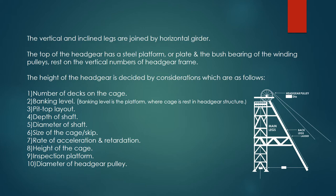The height of the headgear is decided by the following considerations: number of decks on the cage, banking level (the platform where cages rest in the headgear structure), head top layout, depth of shaft, diameter of shaft, size of the cage or skip, rate of acceleration and retardation, height of the cage, inspection platform, and diameter of headgear pulley.